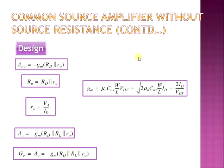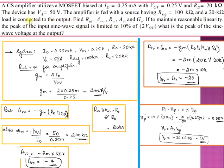Numerical example: A CS amplifier uses a MOSFET biased at ID = 0.25 mA with VOV = 0.25 V, RD = 20 kΩ, VA = 50 V. The amplifier is fed with a source resistance R_signal = 100 kΩ and a load RL = 20 kΩ. We need to compute Rin, AV0, R0, AV, and GV. To maintain linearity, the peak input signal is limited to 10% of 2×VOV; find the peak output sine wave voltage.